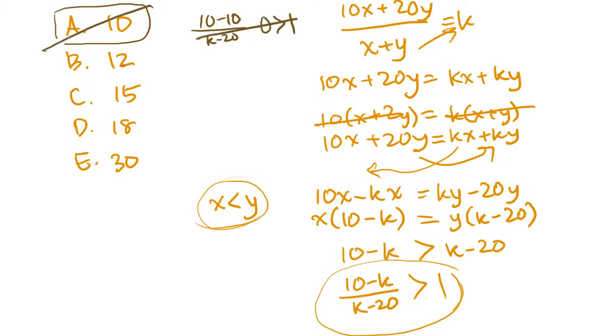Let's go through each of these answer choices and try to figure out if something works. Let's try A first. 10 minus 10, well, already we know that that's going to be 0, and 0 is definitely not greater than 1. So A is not the right answer. B, 10 minus 12 over 12 minus 20. That's going to be negative 2 over negative 8. That's definitely not greater than 1. Let's try C. 15. 10 minus 15 over 15 minus 20, negative 5 over negative 5. That's actually going to be 1. That's not greater than 1, that's equal to 1. So it's not going to be C.